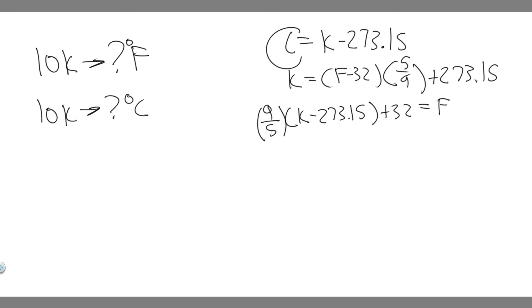So if you want to convert from Kelvin to Celsius, you just have to subtract 273.15 from it. And then if you want to convert from Kelvin into Fahrenheit, you want to use this formula right here. So all we're going to be doing is basically just plugging things in.